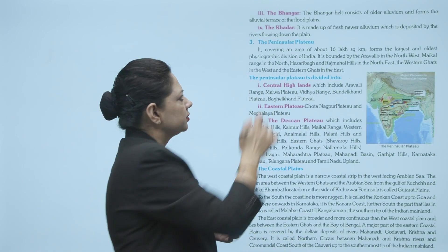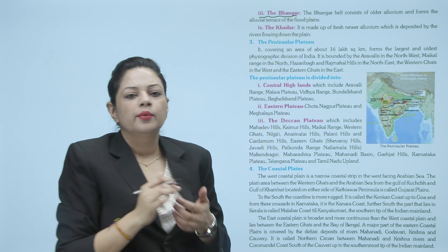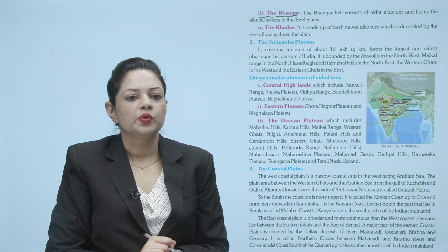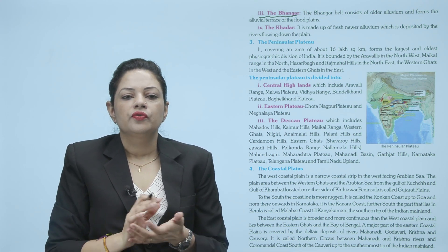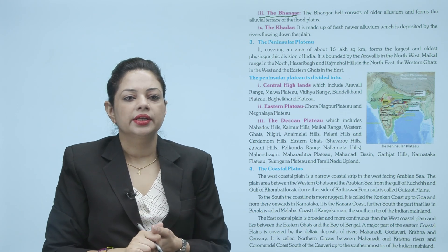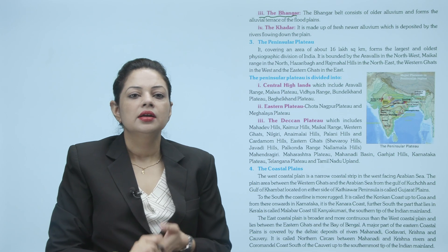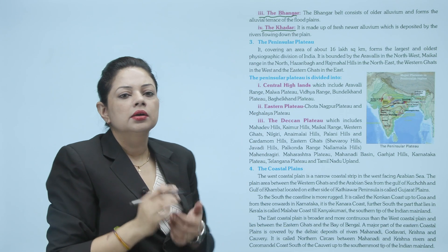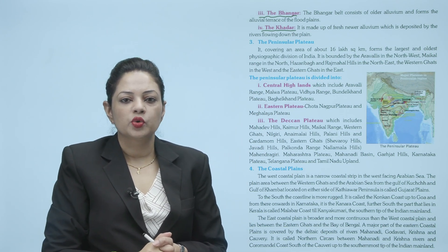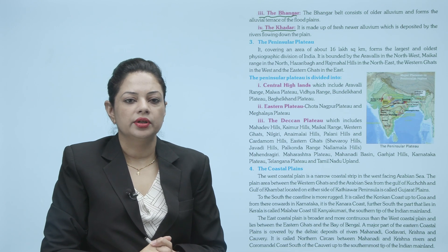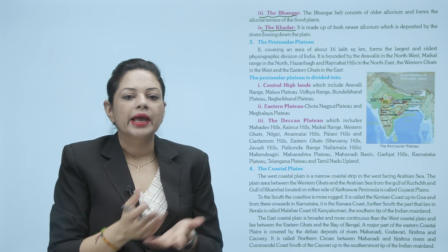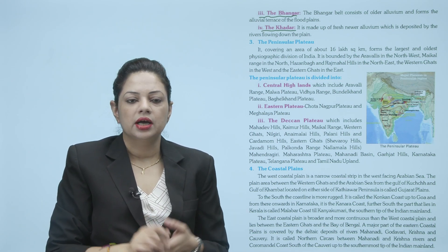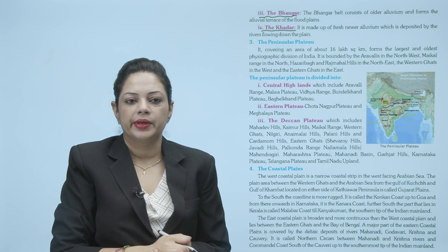Next is Bhangar. Bhangar belt consists of older alluvium and forms the alluvial terrace of the flood plains. Jo flood plains hain aapke, woh Bhangar range mein aate hain kyunki yahaan bhi aapko alluvial deposit milega. Next is Khadar. Khadar range is made up of fresh newer alluvium which is deposited by the rivers flowing down the plain. Jo rivers bah kar aati hain, apne saath mitti lekar aati hain, unke deposit se aapki Khadar range bani hai.